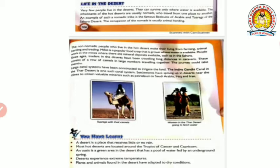The non-nomadic people who live in the hot desert make their living from farming, animal herding and trading. Not only travelers, but some people also live there permanently - for example in Rajasthan there is an education system and hospitals. Millet is a popular food crop that is grown where water is available. People work in mines where mineral deposits are available, just as in the Sahara desert where they work in mines for minerals.